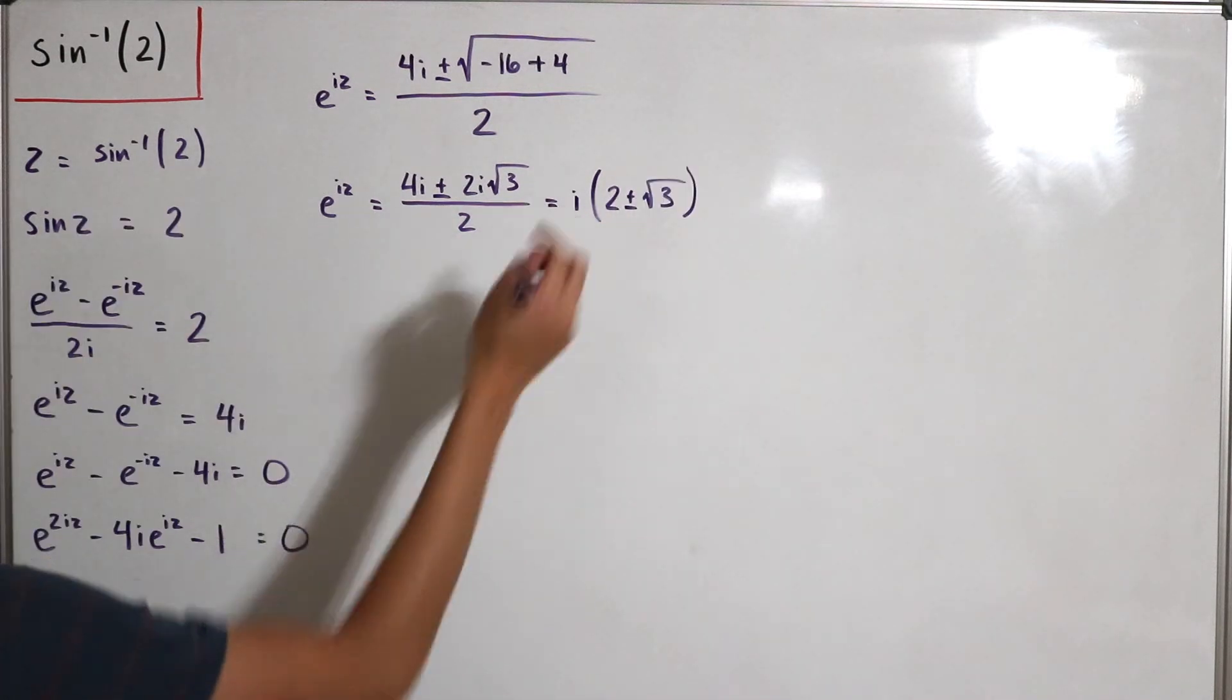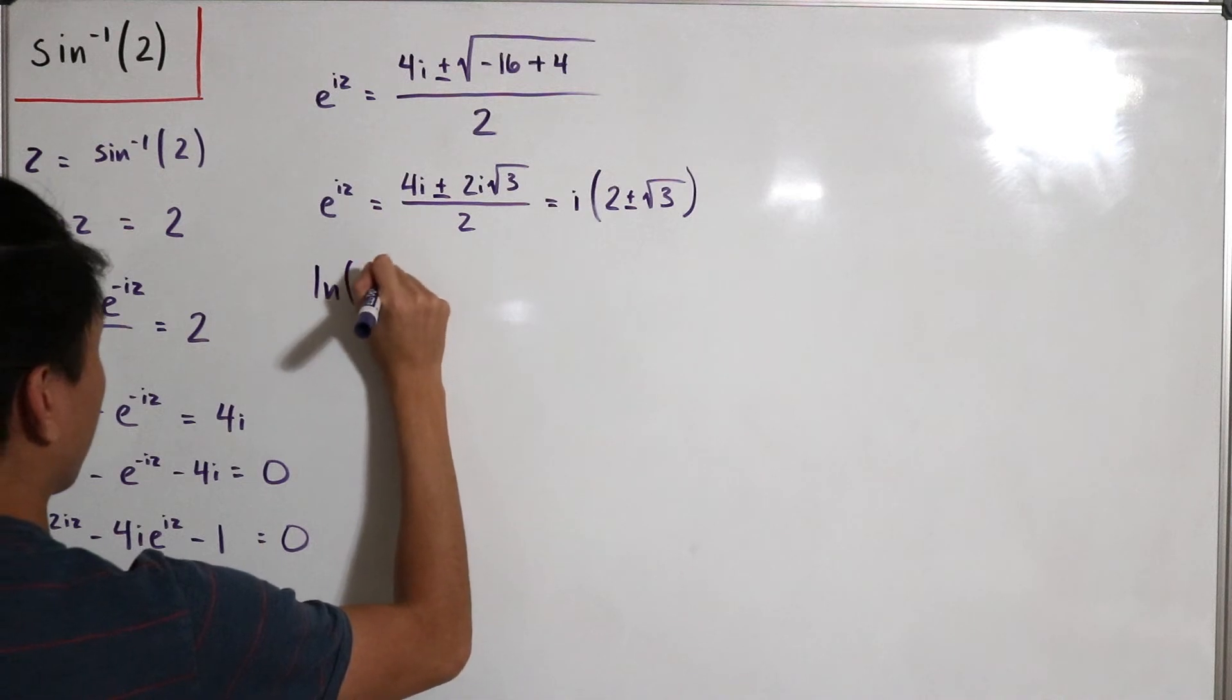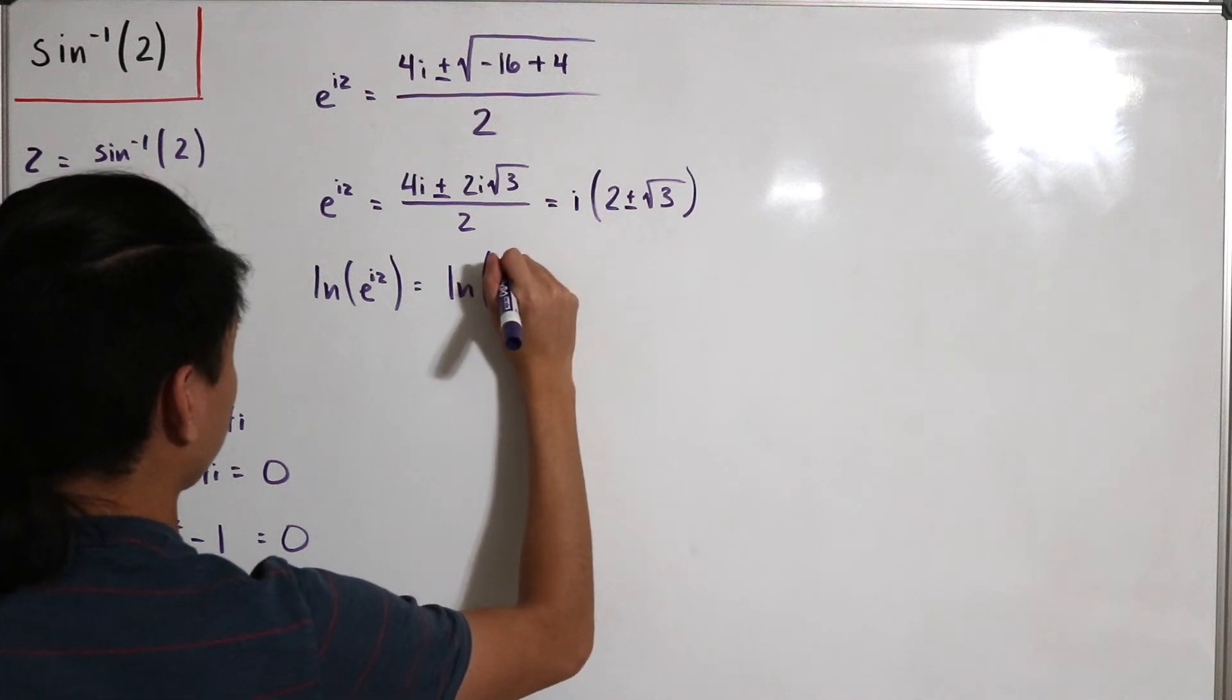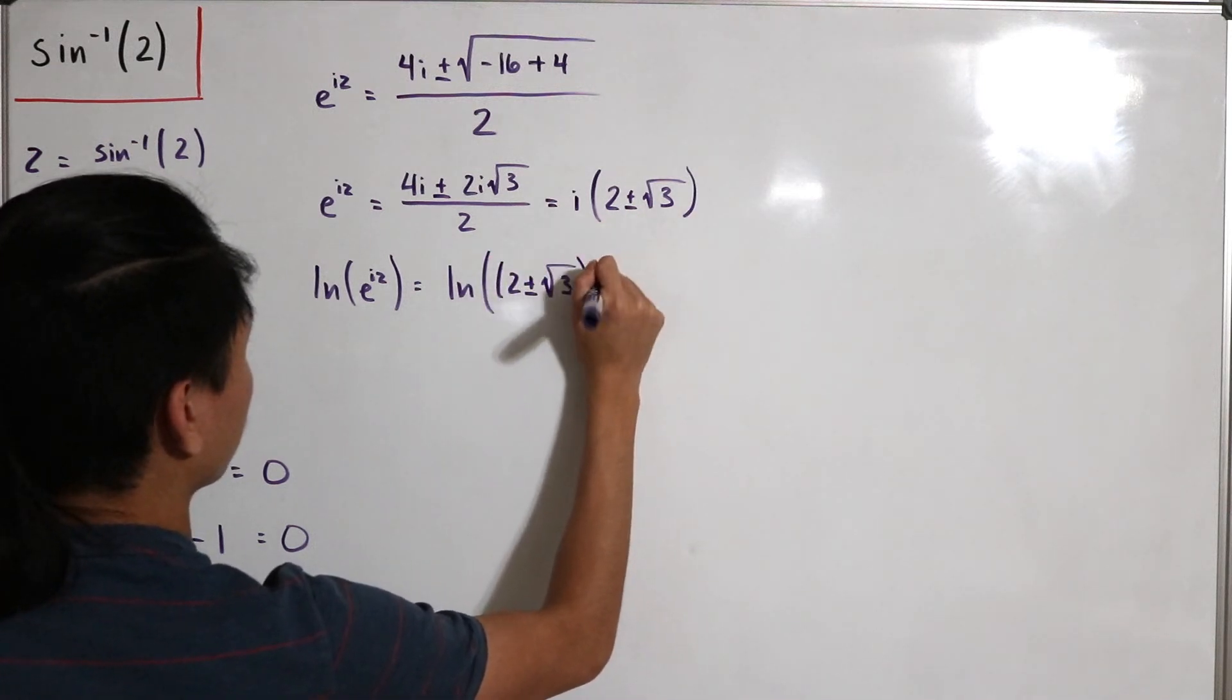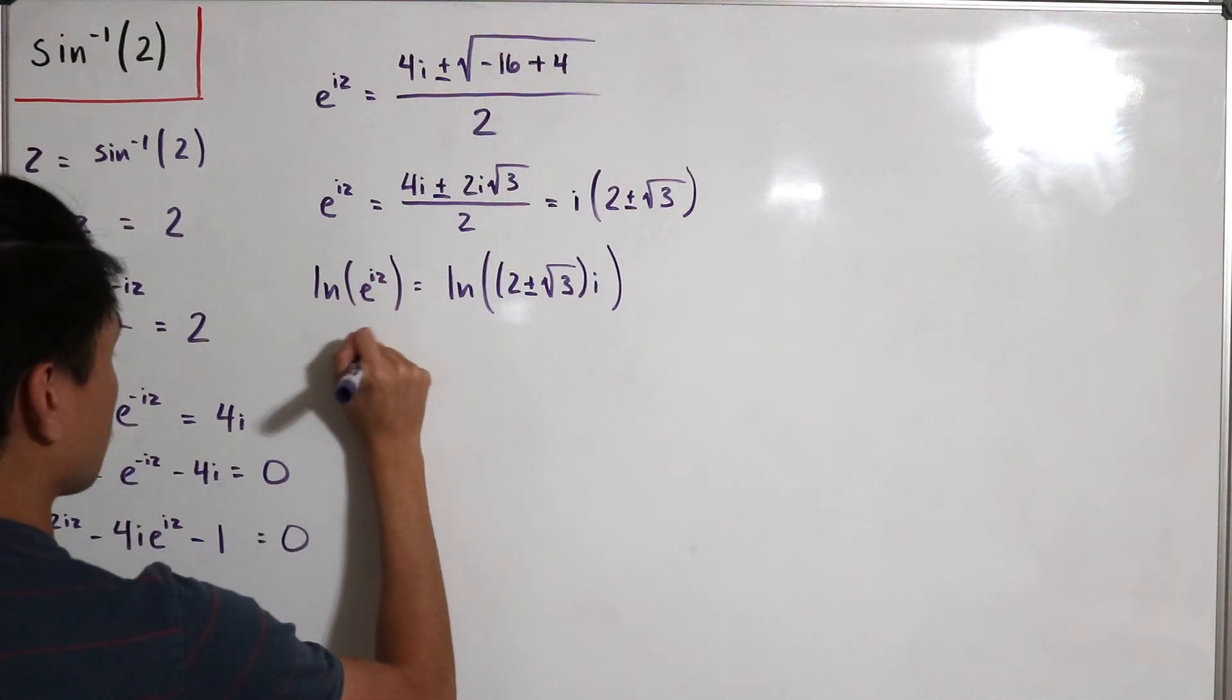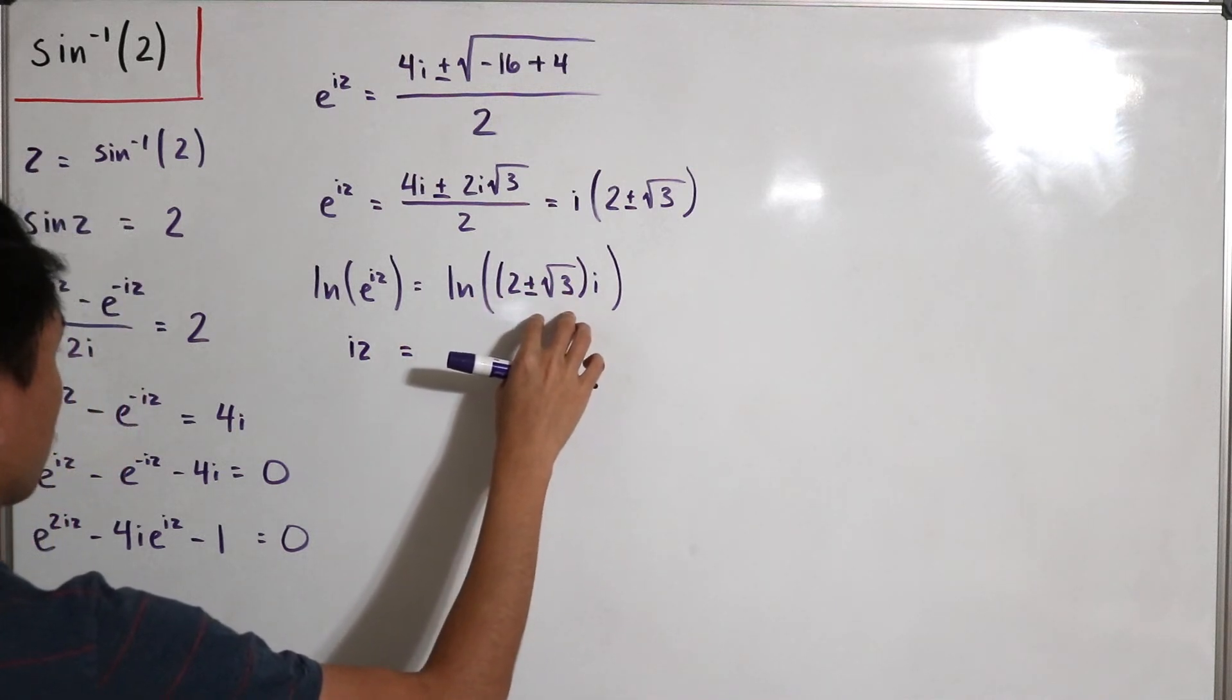So next I can actually just take the natural log of both sides: natural log of e to the power iz then equals the natural log of, I'll write the coefficient in front of the imaginary unit, 2 plus or minus square root of 3 multiplied by i. And then over here this is just, ln and e is just cancelled, so it's just i times z. Then I can just use the rules of natural logs and write this as a sum.